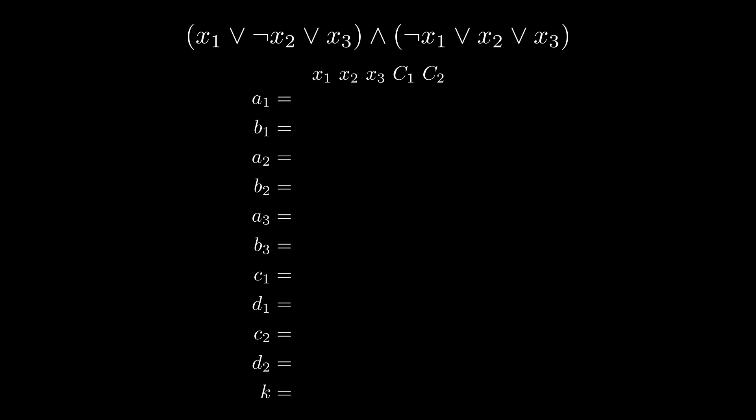To do this, we define a set of integers based on the input boolean formula. For each variable x_i, we define the integers a_i and b_i. And for each clause C_i, we define the integers c_i and d_i. The value of k will be specified later.